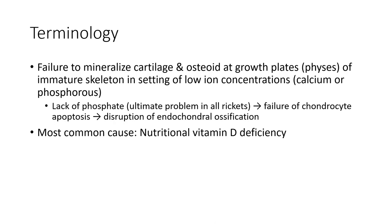Rickets: failed to mineralize cartilage and osteoid at growth plate. Species of the immature skeleton in setting of low calcium or phosphorus concentration. Lack of phosphorus leading to failure of chondrocyte apoptosis, disruption of endochondral ossification.